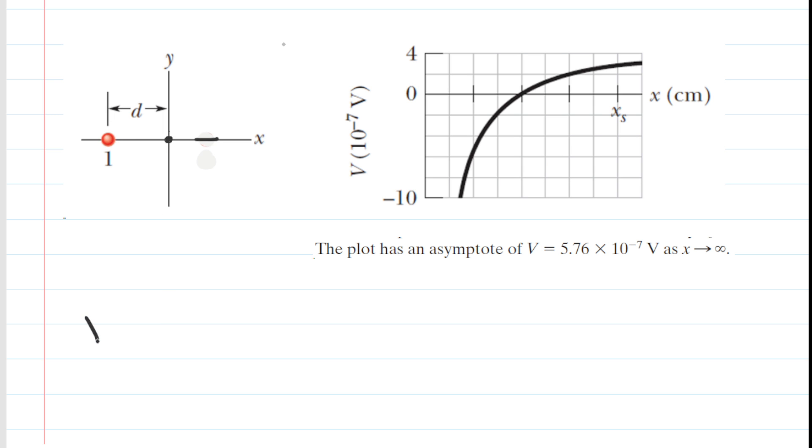So we might say that the potential, and this is at the origin, is going to be the potential produced by charge 1. And that's going to equal a constant times the value of charge 1 and then divided by the distance from charge 1 to the origin. But that was symbolized as d.